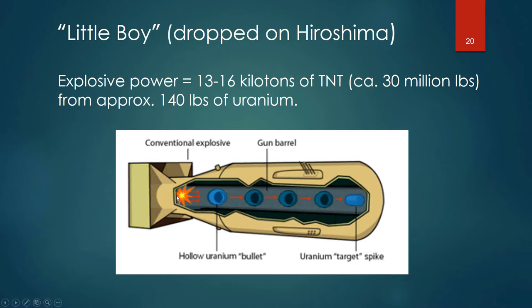They had a hollow uranium bullet in the back. Upon dropping, a small conventional explosive — like a little pellet of TNT — acts as a pressure trigger. As soon as the conventional explosive is subjected to a certain amount of force, it propels the hollow uranium bullet forward into the second mass of uranium. Before you drop the bomb, you've got two small masses of uranium that are not going to undergo fission on their own, but as soon as you combine them with force, they readily undergo fission.